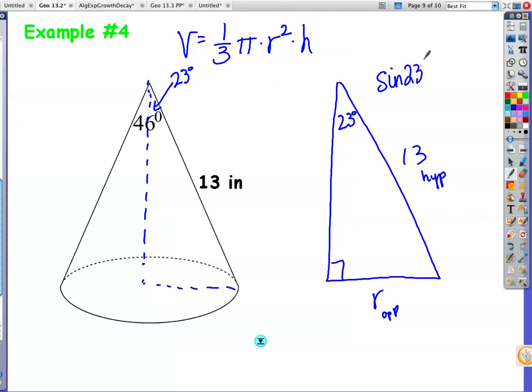So sine of 23 degrees, because it's SOH, so I'm going to have r over 13. So I go ahead and calculate that. Make sure your calculator is set to degrees. Sine of 23 degrees times 13, because I'm going to take this times 13 to solve for r, and now I get a radius of 5.0795.